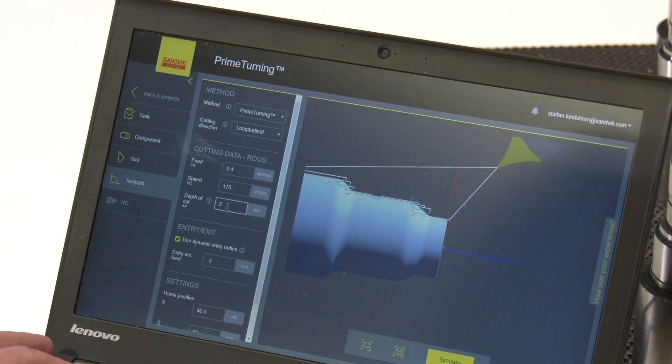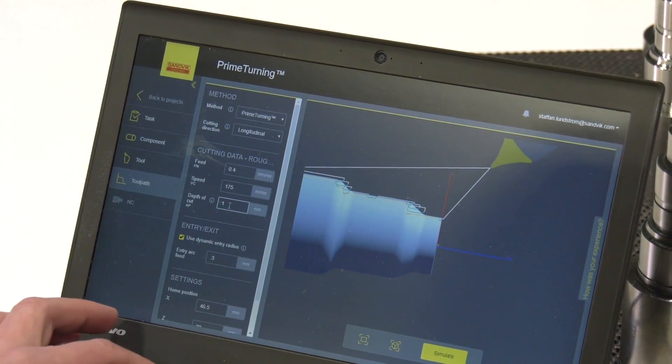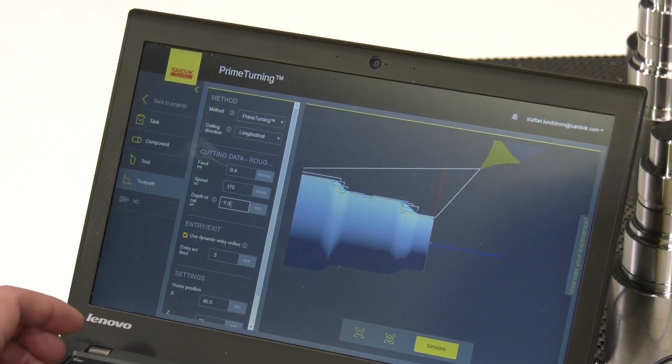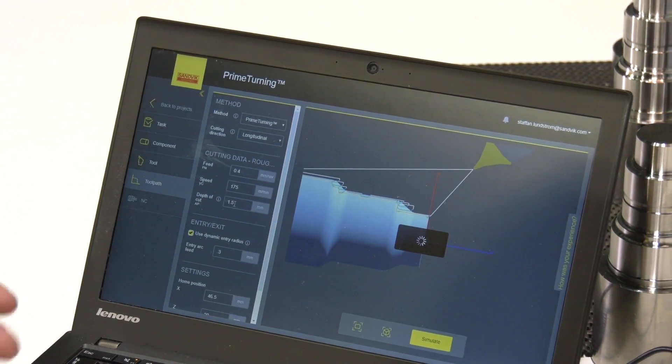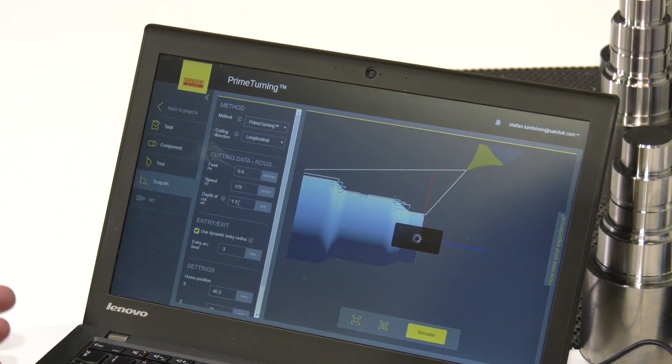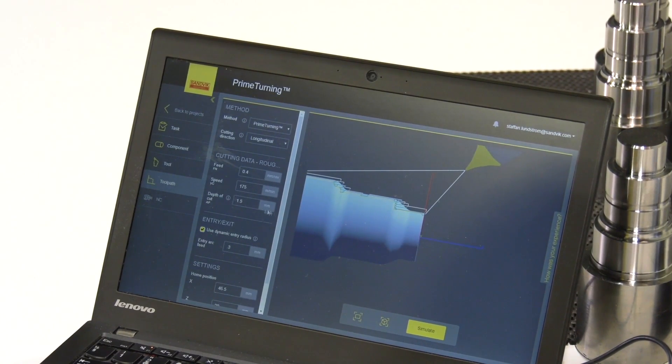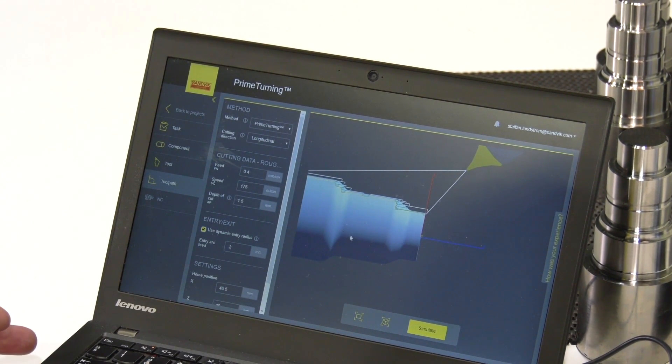And for example I can go back here and change the depth of cut to 1.5mm. And if you are used to CNC programming you know how much job it is to make a new program by changing the depth of cut. But here we have a new program generated. We run the simulation. And then it starts automatically to generate NC code.